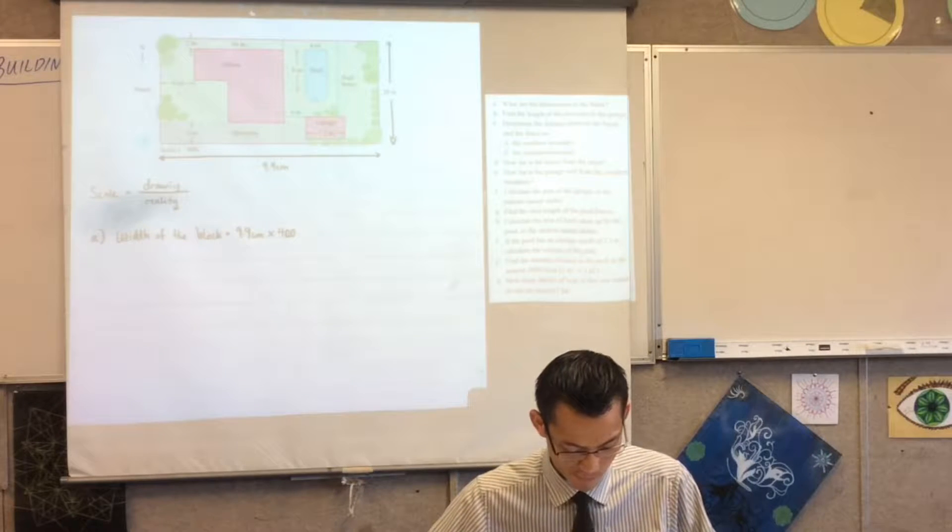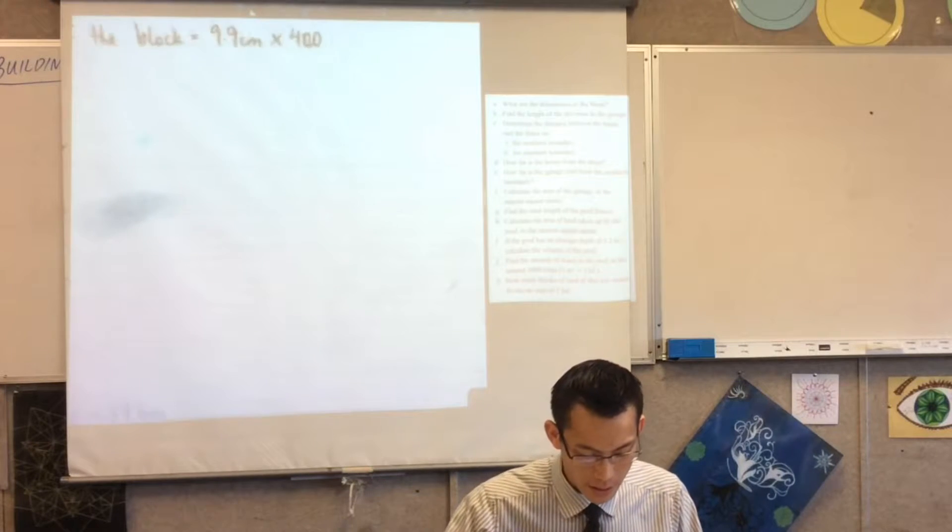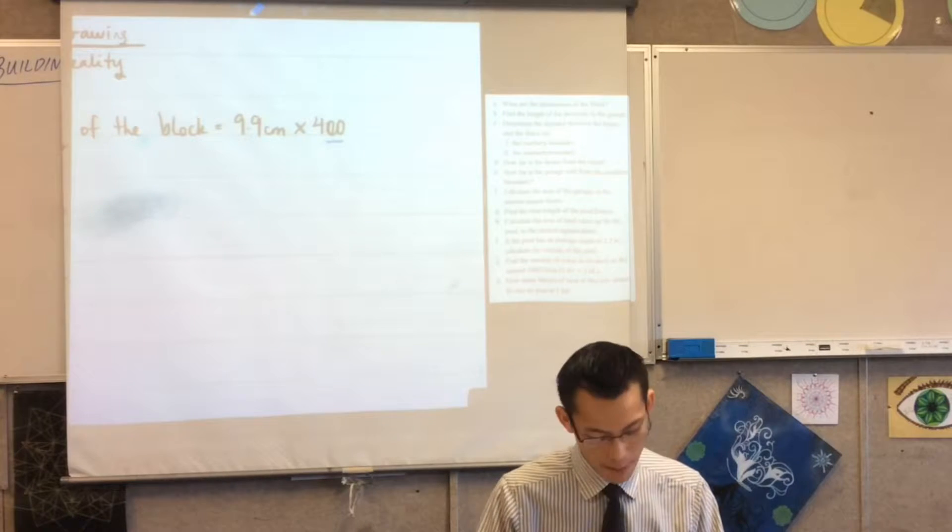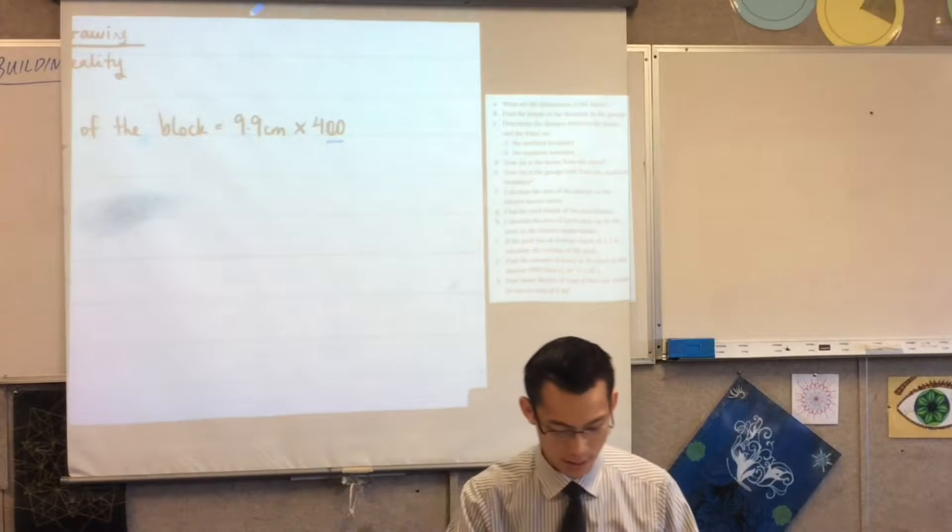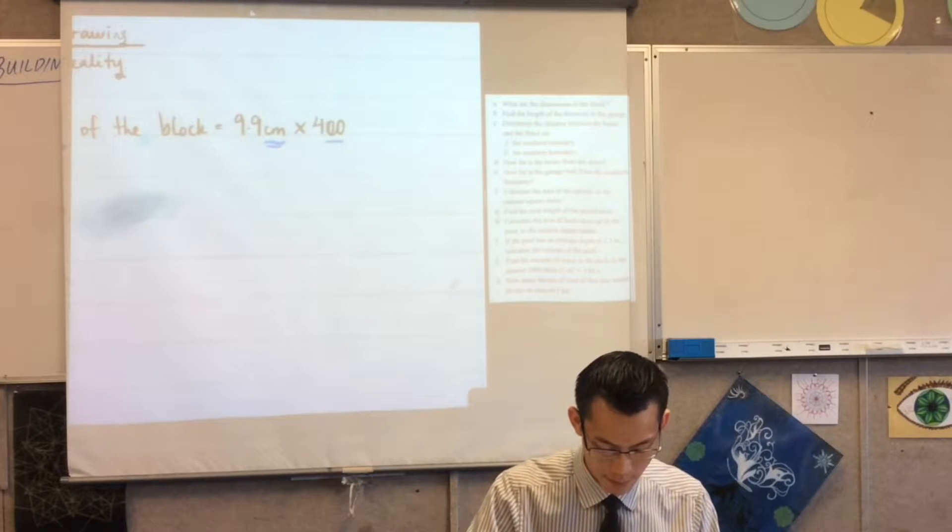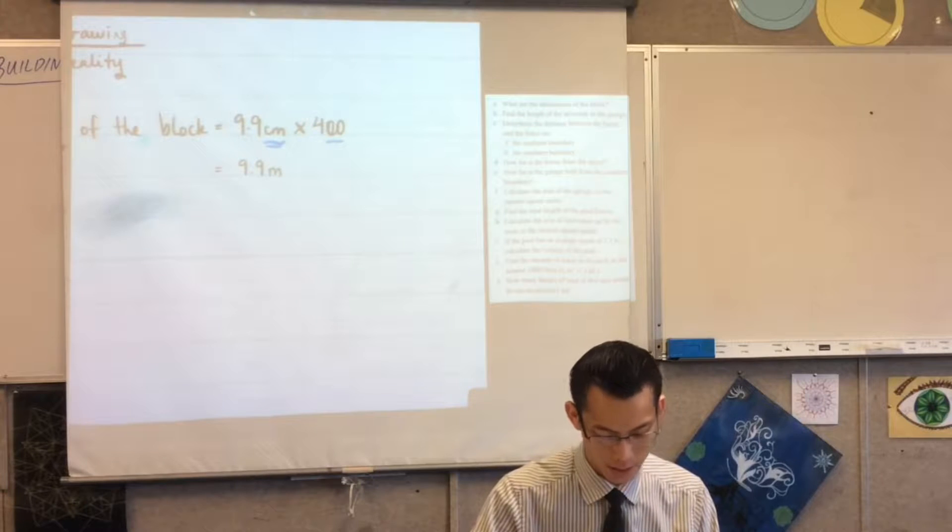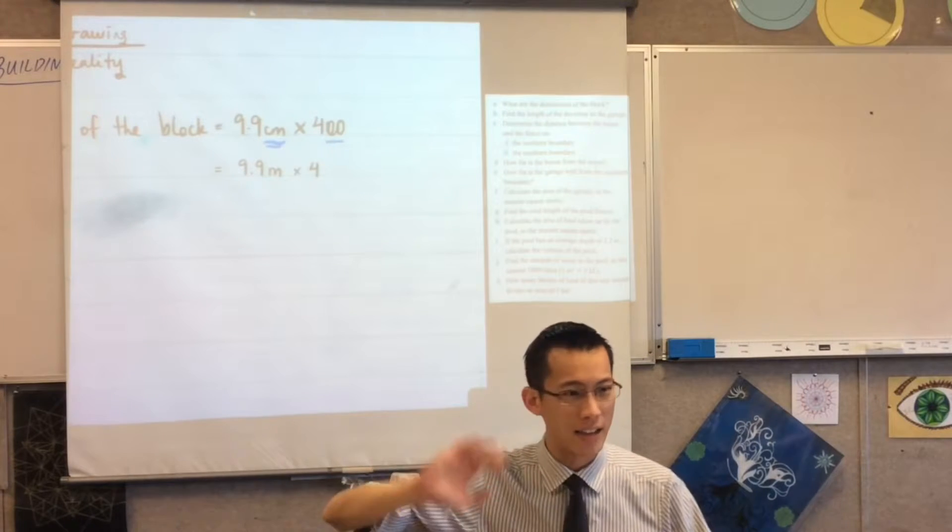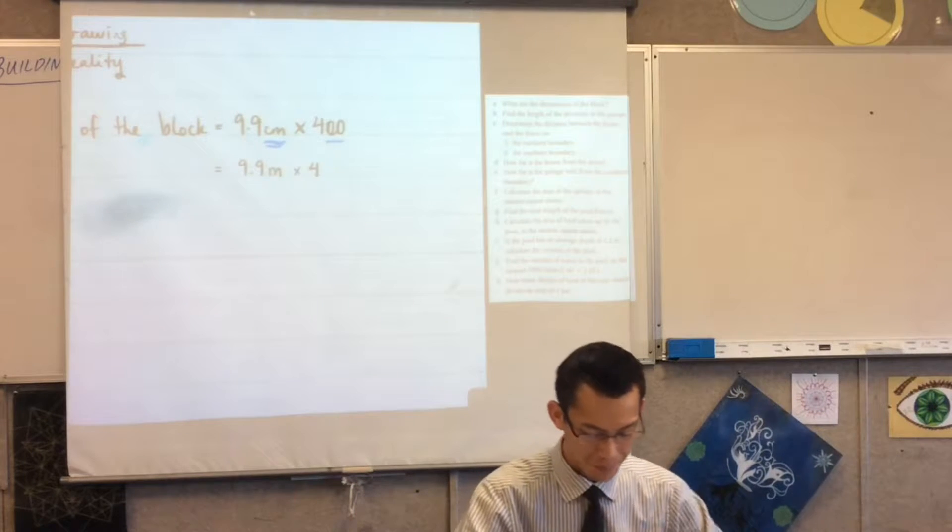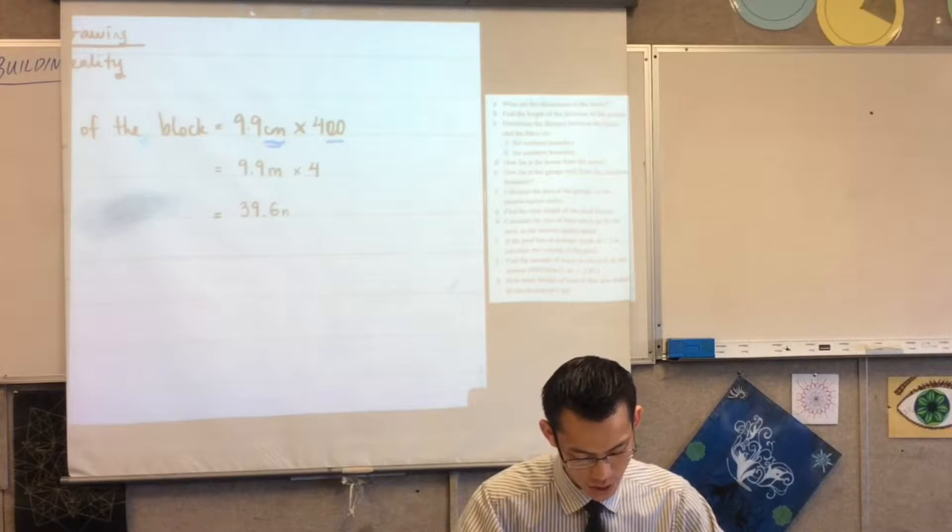Okay so you can see I'm going to multiply by 400. I'm gonna do this quite a lot. Multiplying by 100 is the same as changing from centimeters to meters right? So if you want you can write this down: 9.9 centimeters is going to become 9.9 meters times 4. You can then go to your calculator, that's 39.6 meters.